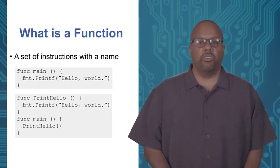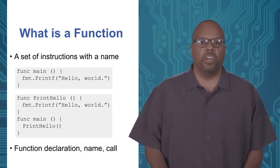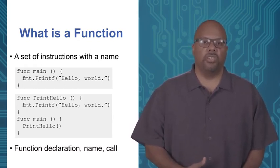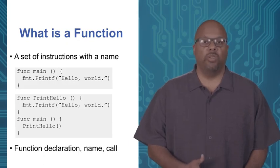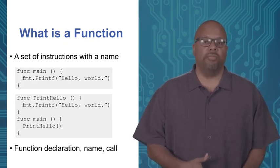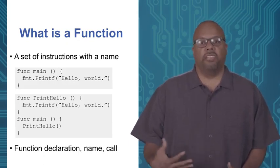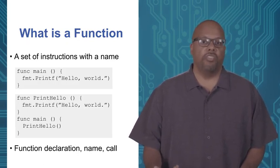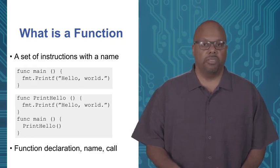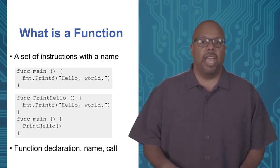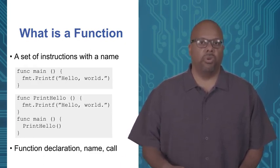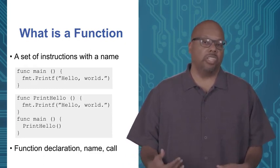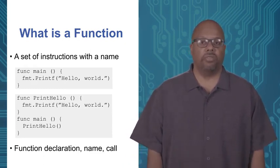A function declaration is where you define the function. A function declaration in Golang starts with the keyword func, F-U-N-C, then you have the name of the function, then open paren and close paren. You might have arguments in there — we'll talk about that soon — and you can also have return values. Then there are curly brackets, and inside the curly brackets is the contents of the function.